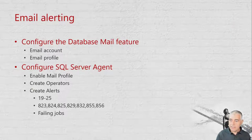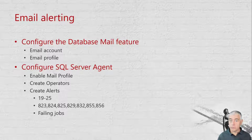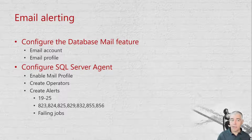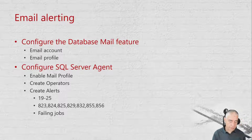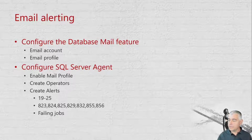SQL Server has built-in email alerting for job failures, so there's no reason not to use it. To set it up: first configure Database Mail with an email account and profile, then enable the mail profile on SQL Server Agent, create operators, and create alerts for specific error severities. Alerts should cover severity levels 19 through 25 and specific errors inside SQL Server. Setting up this email configuration is very simple using scripts.